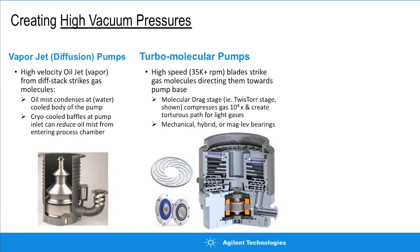A critical component of turbo pumps is the bearing mechanism. Agilent's floating suspension design improves robustness and greatly reduces vibration transmission — particularly important for semiconductor applications and electron microscopes where reducing vibration improves image quality. Some competitors use a hybrid combination of mechanical and permanent magnetic bearings. At the high end, magnetically levitated turbo pumps use electromagnets to float, position, and spin the rotor.